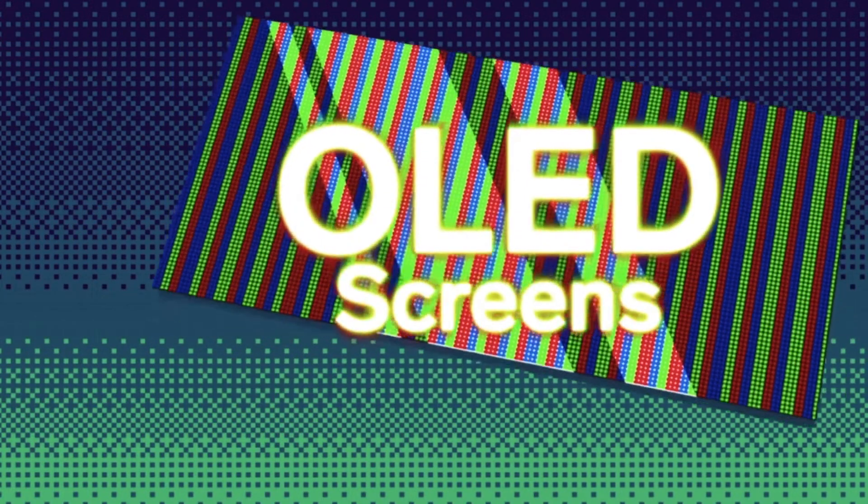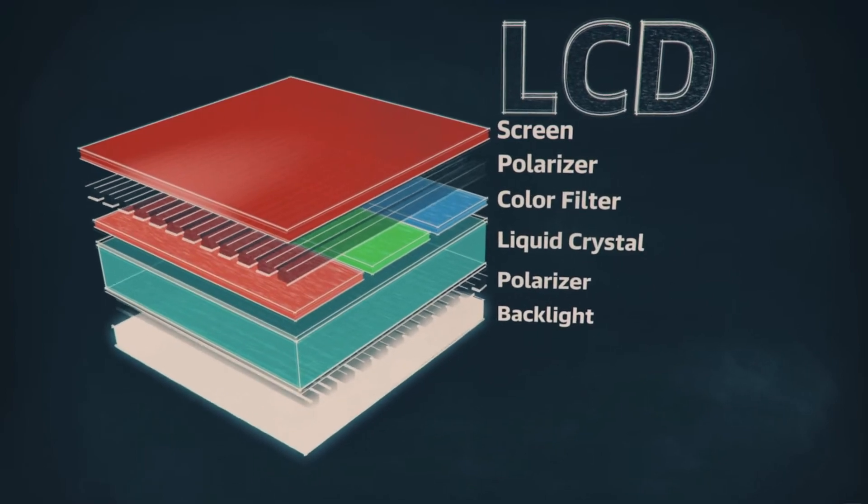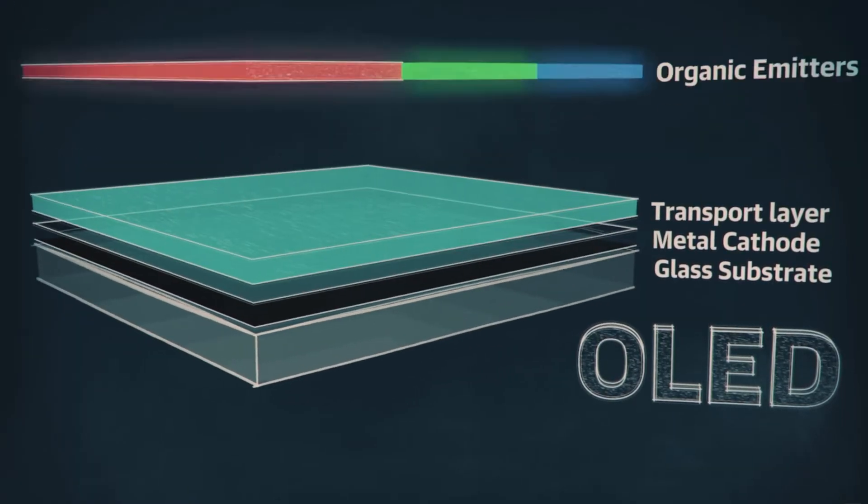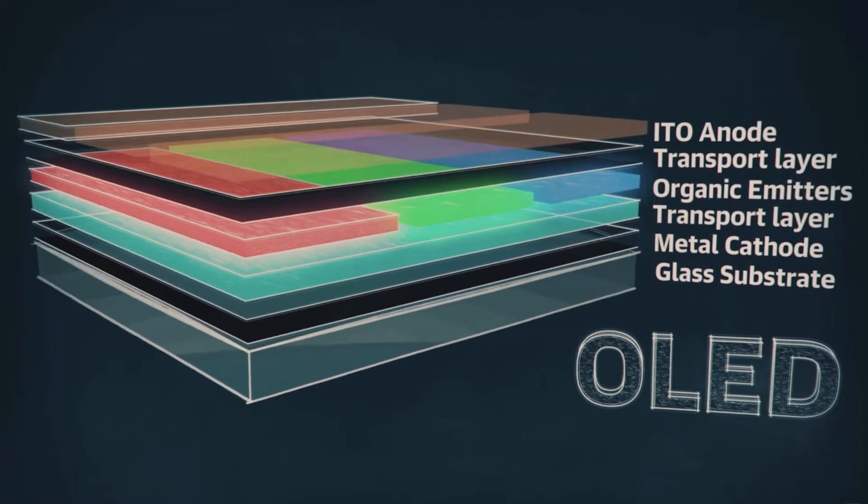Where OLED screens differ is that the displays are emissive, meaning that they produce their own light. Unlike LCDs, which are non-emissive and are instead illuminated by a backlight, the pixels on OLED screens are built into the screen itself rather than behind it and projecting through a glass pane.